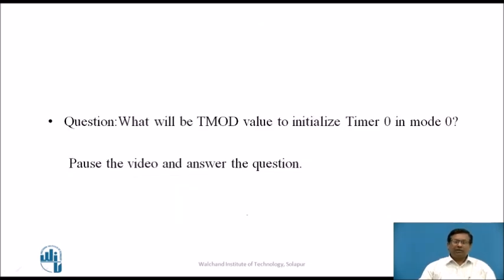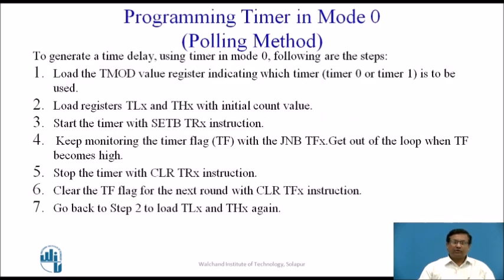Now let us have a question: what will be the TMOD value to initialize Timer 0 in mode 0? Please pause the video and answer the question. The answer is 00H. Now we will see programming of timer in mode 0. There are two methods of programming: the polling method and the interrupt method. The following algorithm gives the steps for programming the timer in the polling method.